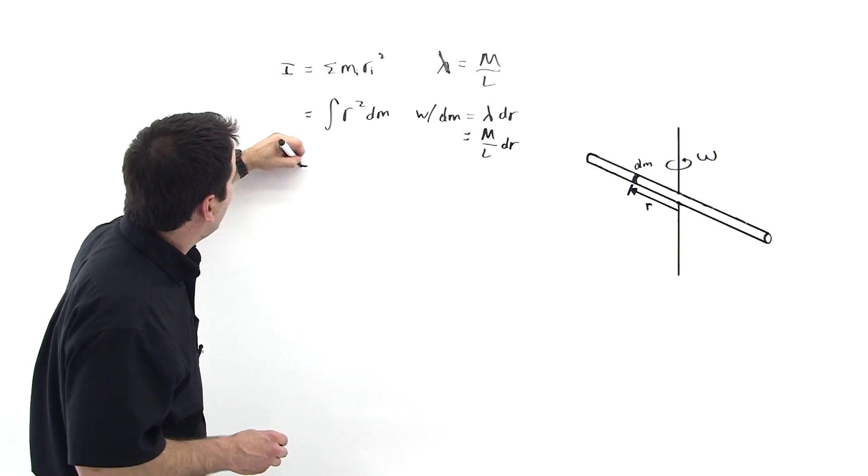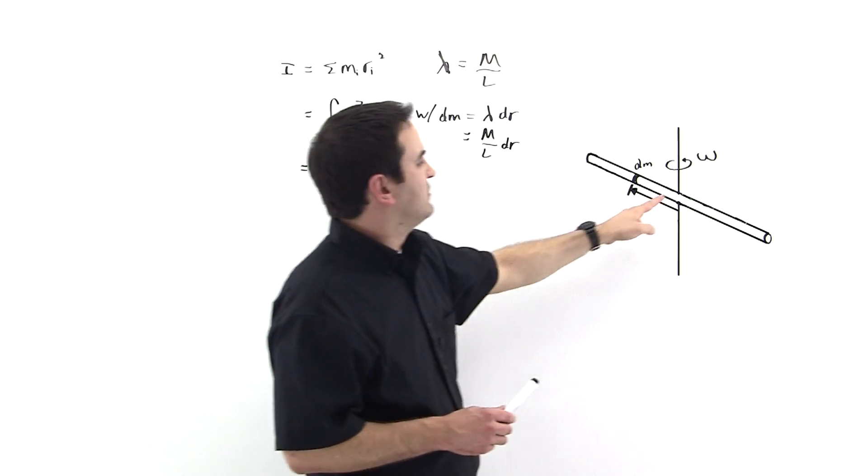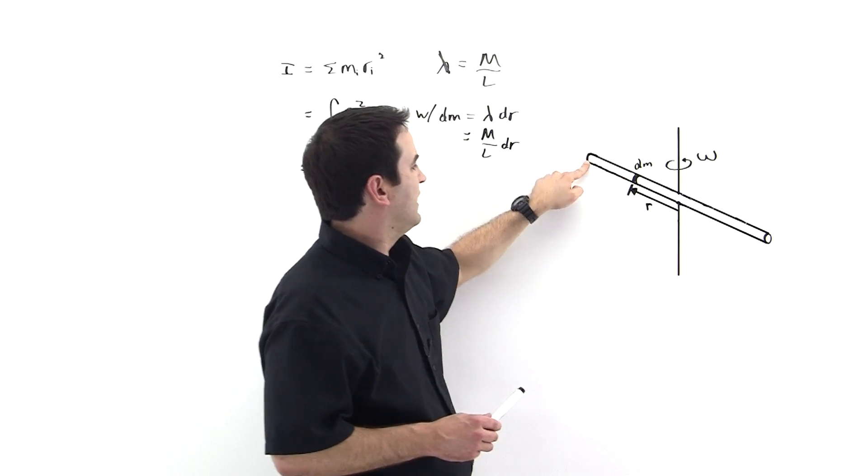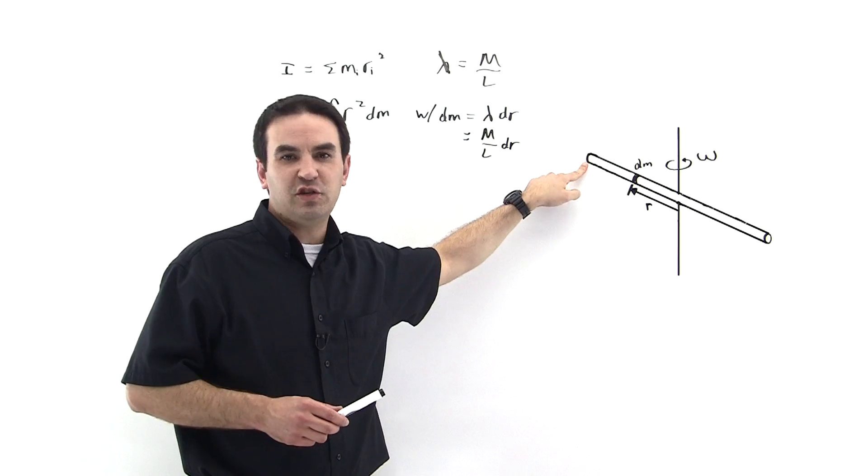So coming here, notice that we're going to integrate from 0 out to here. This is l over 2, right?